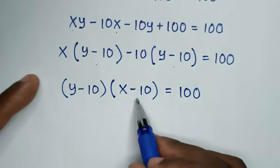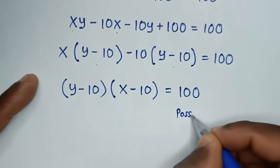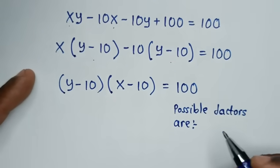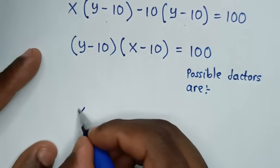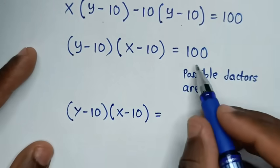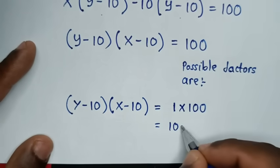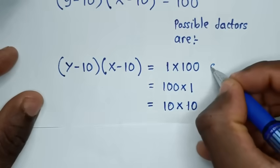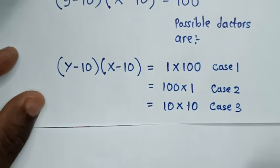Now, (y minus 10)(x minus 10) equals 100. The possible factors of 100 are: 1 times 100 (Case 1), 100 times 1 (Case 2), or 10 times 10 (Case 3).